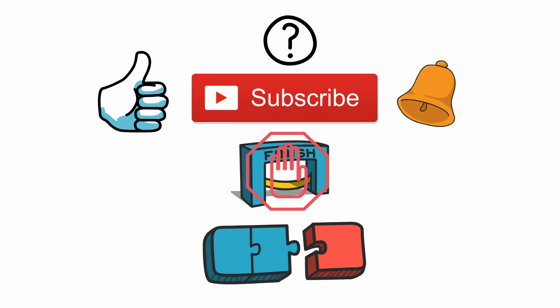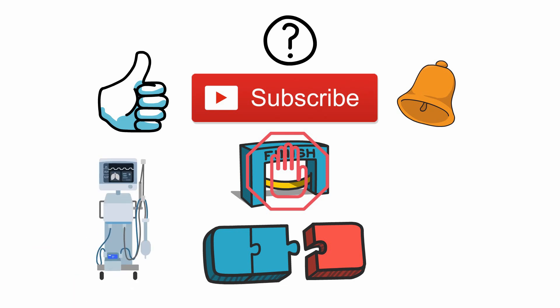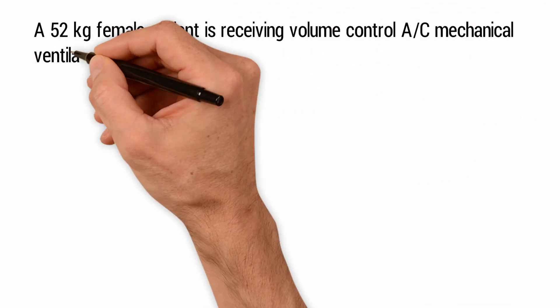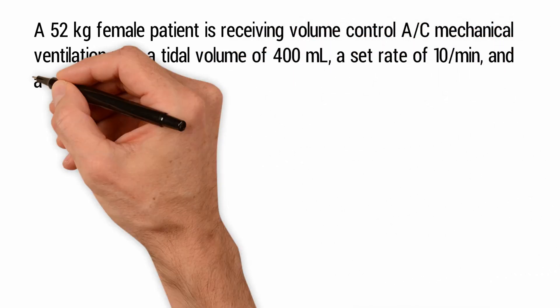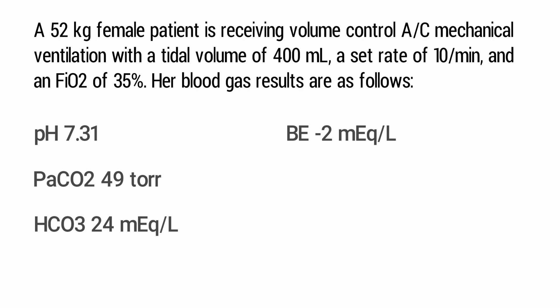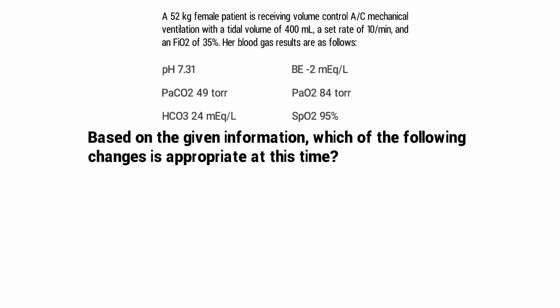This next question is about making adjustments to ventilator settings according to the patient's ABG results. A 52-kilogram female patient is receiving volume control assist control mechanical ventilation with a tidal volume of 400 milliliters, a set rate of 10, and an FiO2 of 35%. Her ABG results are as follows. Based on the given information, which of the following changes is appropriate at this time?